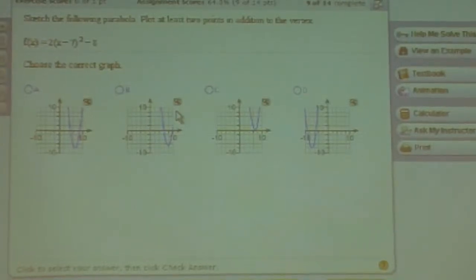Notice that A is positive 2. Because A is positive, the graph will open upward. Well, all four choices have a graph that opens upward.